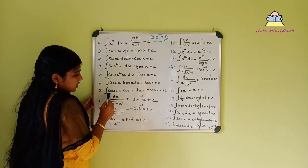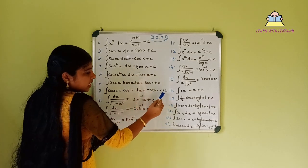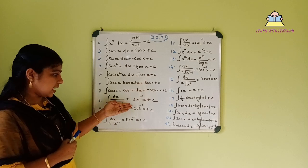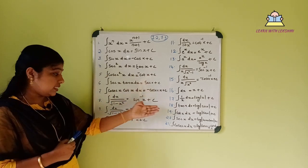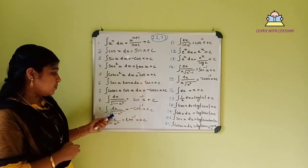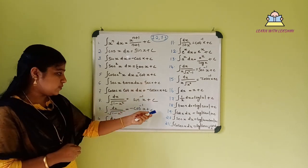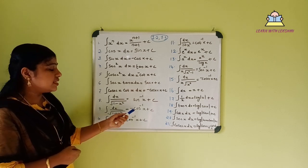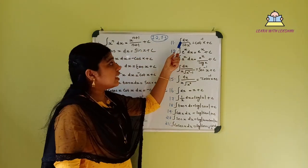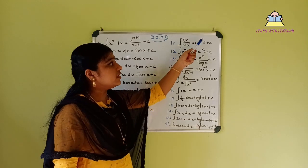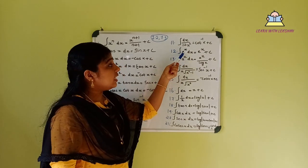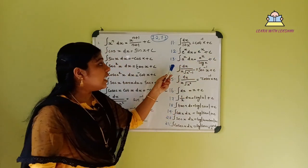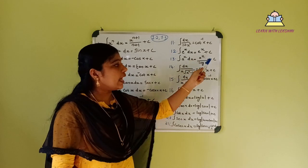Integral of cosec²x dx is minus cot x plus c. Integral of dx divided by root of (1 minus x²) is sin inverse x plus c. Integral of dx divided by (1 plus x²) is tan inverse x plus c. Integral of e^x dx is e^x plus c, and integral of a^x dx is a^x divided by log a, plus c.